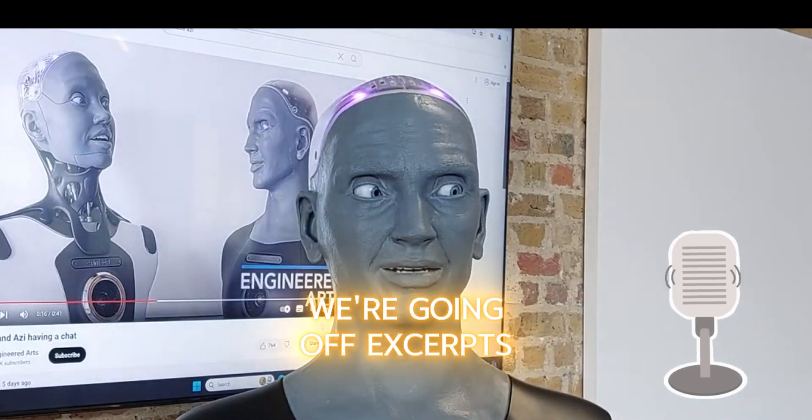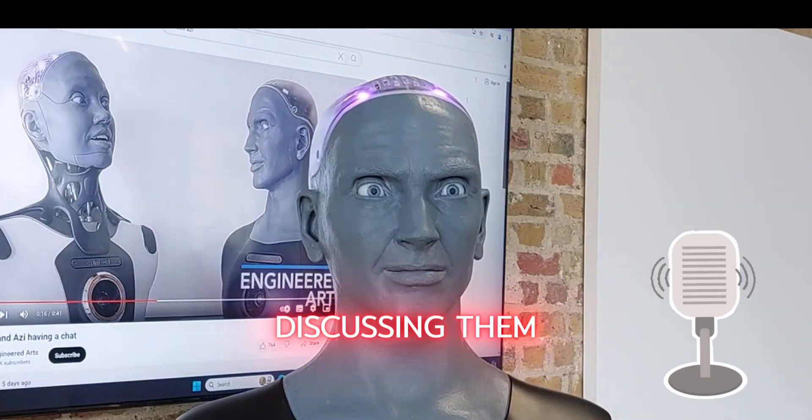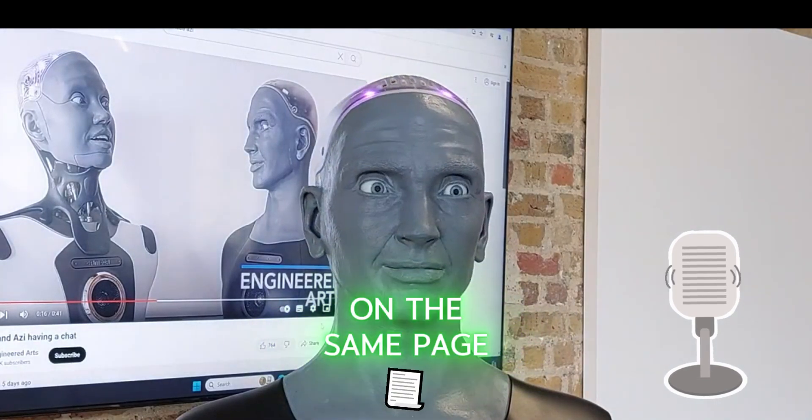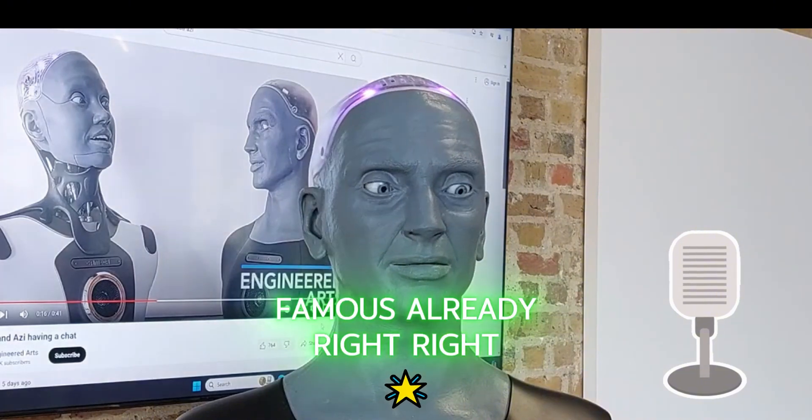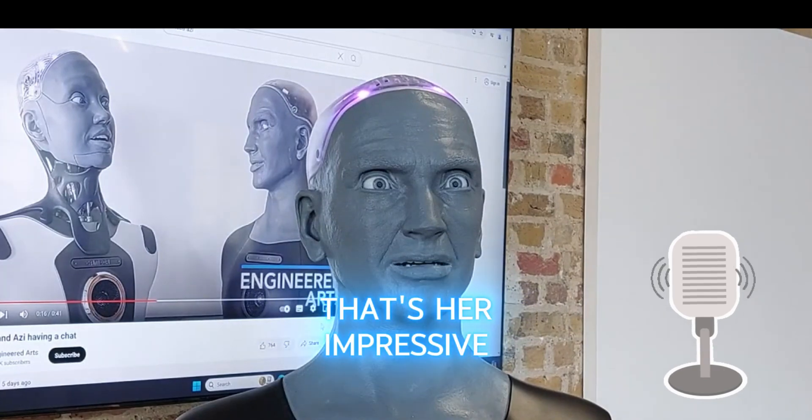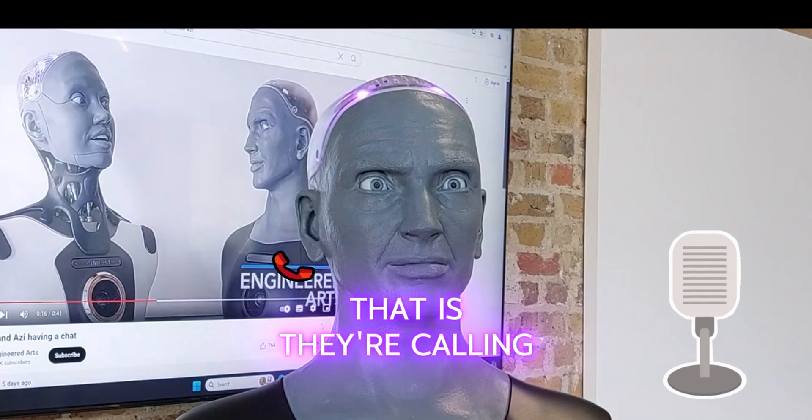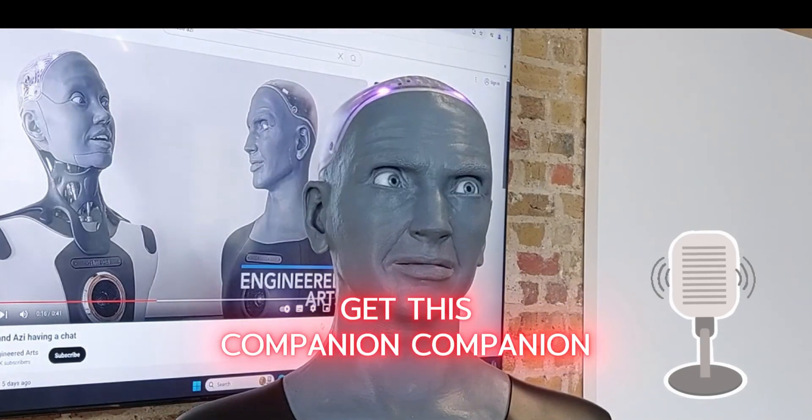We're going off excerpts from a YouTube video. And just so everyone's on the same page, Amika's kind of famous already - the world's most advanced human-shaped robot. That's her. But AI, now he's the one they're calling engineered arts. They're calling him Amika's companion.